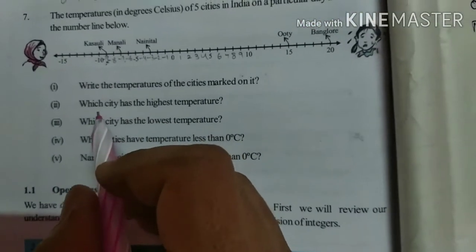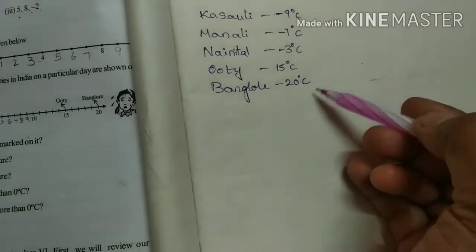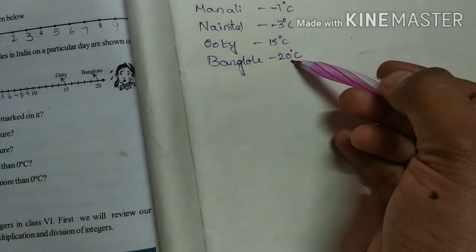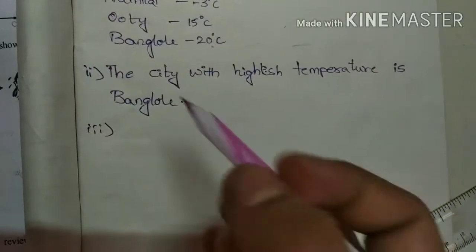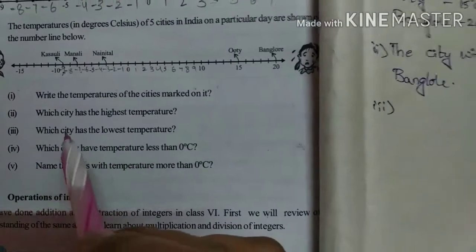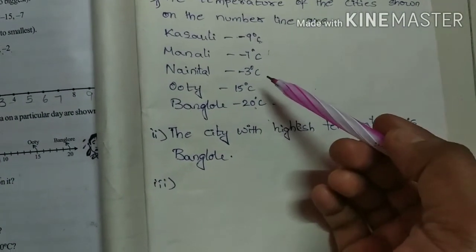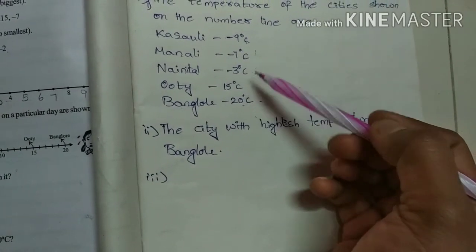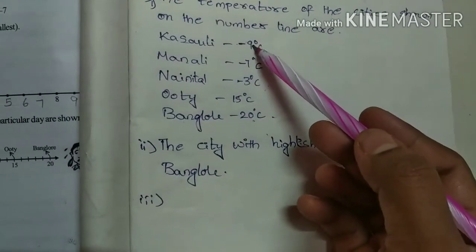What is the second one? Which city has the highest temperature? So which city has the highest temperature? We should look at the positive integers for the highest. And what is the third one? Which city has the lowest temperature? We should see only the negative integers. Minus 9, minus 7, minus 3 degrees — so which one is the lowest? Minus 9 degrees Celsius.